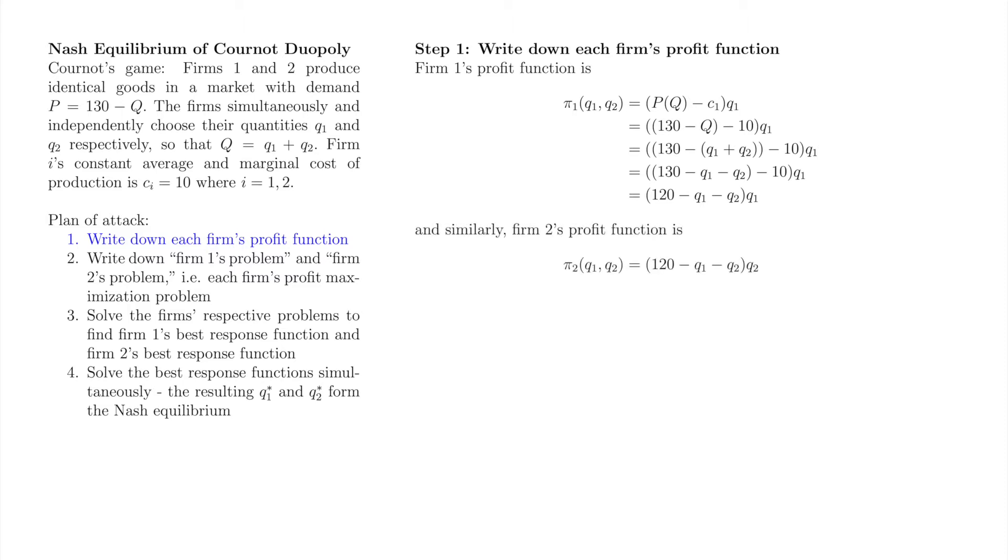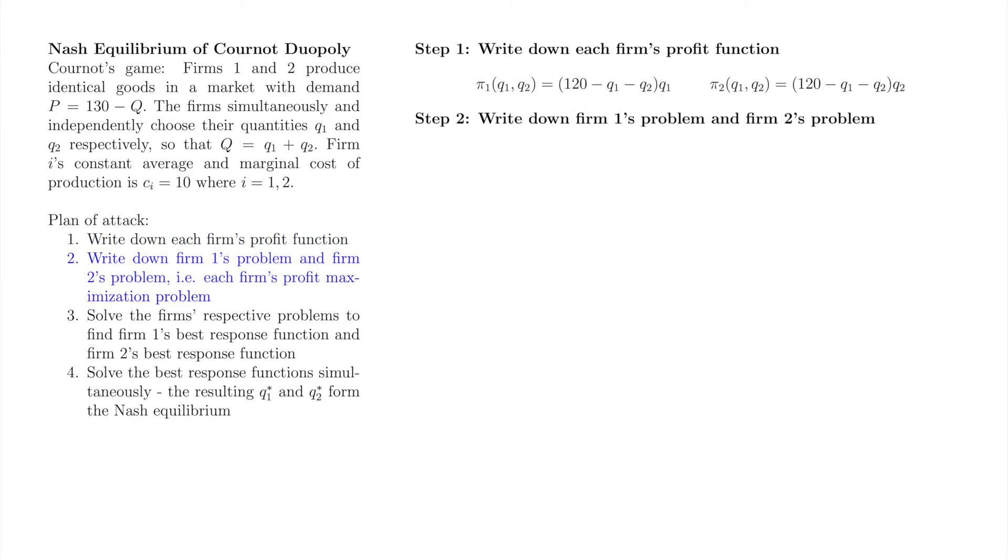We could repeat this process for firm 2's profit function, but since firms 1 and 2 have identical cost functions, we can simply exchange the places of q1 and q2. But be alert, the problem set contains a problem in which the firms have different costs, so this trick cannot be used. After we complete each step, I'll keep the results of that step at the top of the right side of the screen, and continue the next step below those results.